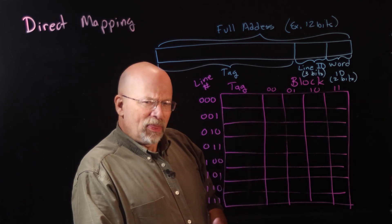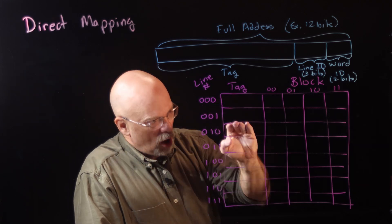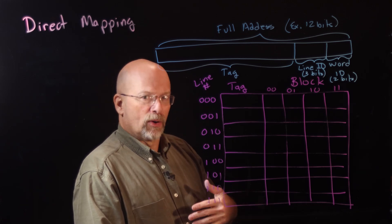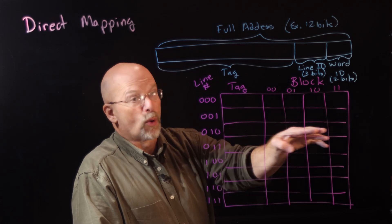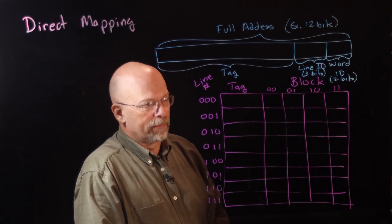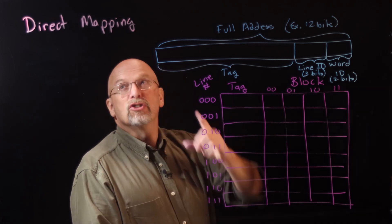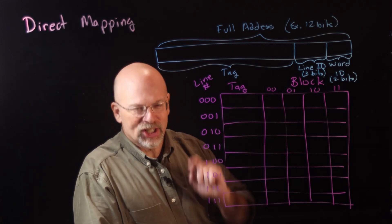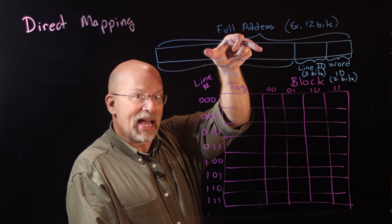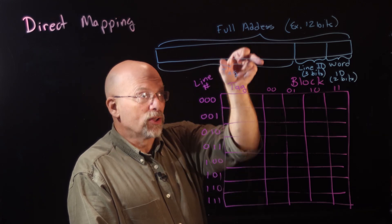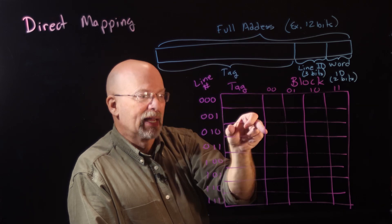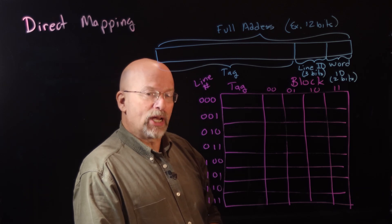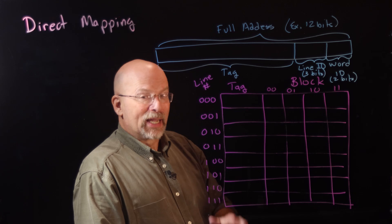What this does for us is that every address will always be found in exactly the same location, every time, regardless of how many times things are replaced. It makes direct mapping really fast because you don't have to check the whole cache to see if your block is in it — you just check the specific line. The tag also has fewer bits to compare, so it's cheaper. All you do is compare the fewer tag bits with what's stored in that line.